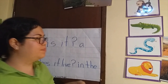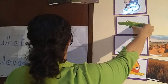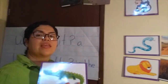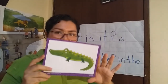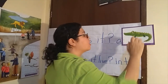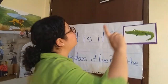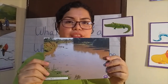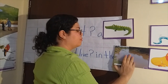Next one. What is it? It is a crocodile. Where does it live? It lives in the river. In the river.